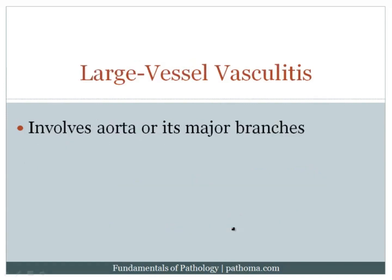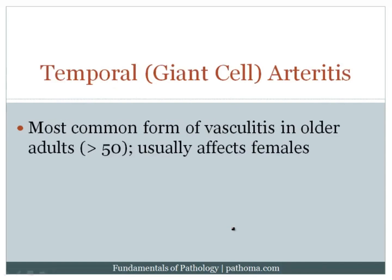When you think about vasculitis, the best way to divide it is large vessel, medium vessel, and small vessel. The large vessel vasculitides involve the aorta or its major branches, and there are two we're going to discuss. The first is called temporal or giant cell arteritis. Once you know the name, temporal giant cell arteritis, the name gives away much of what you need to know about this disorder.